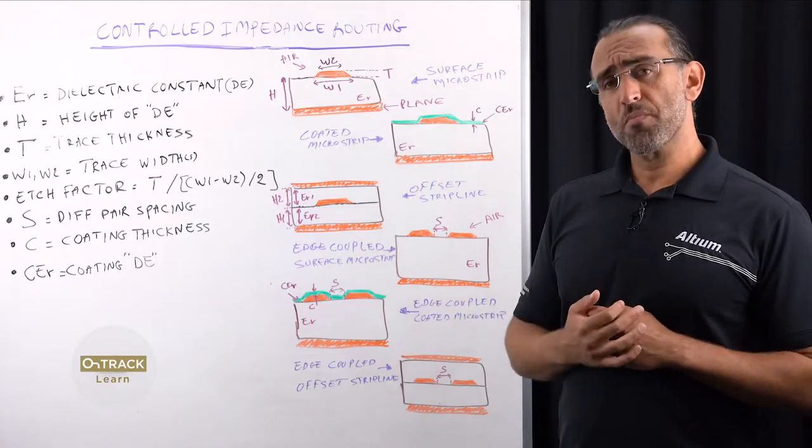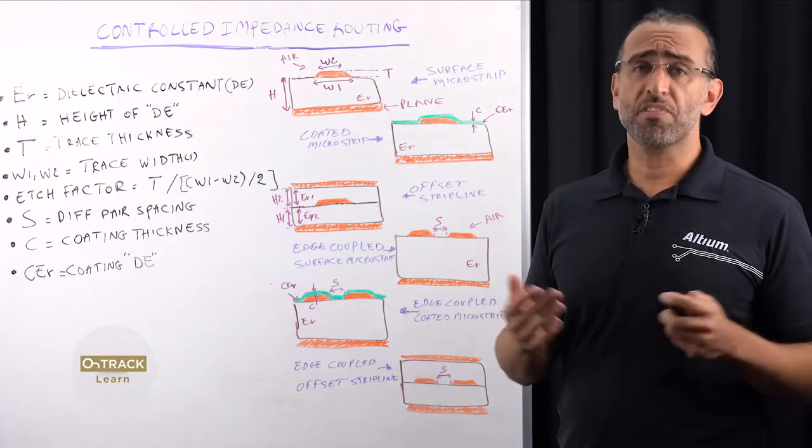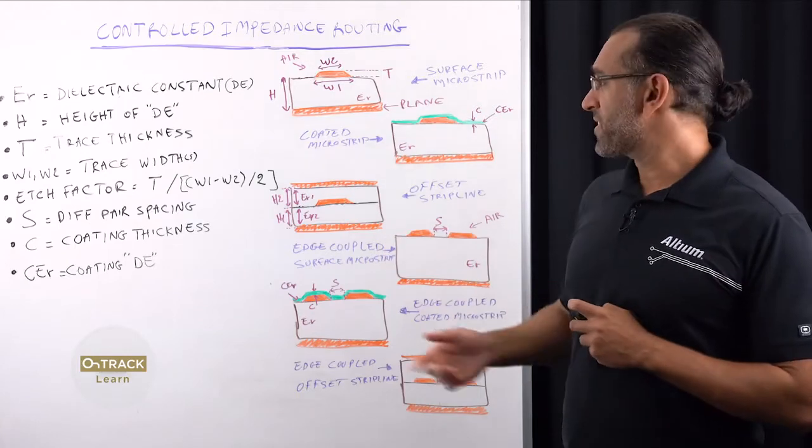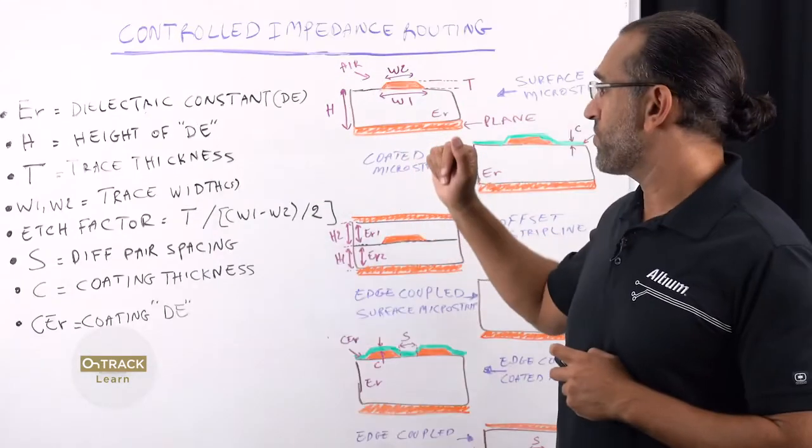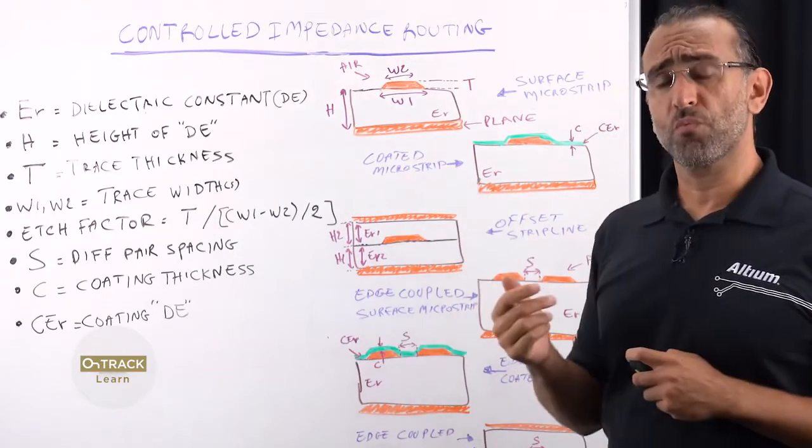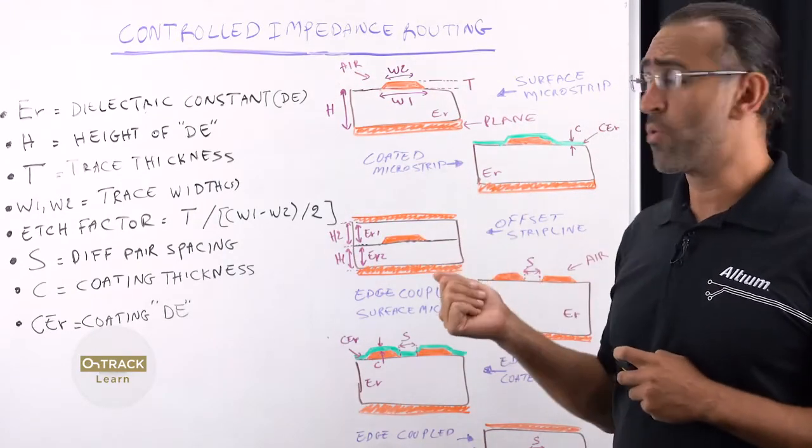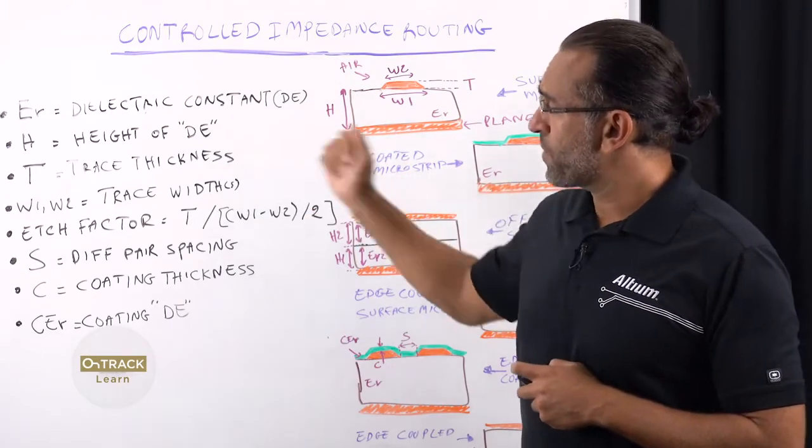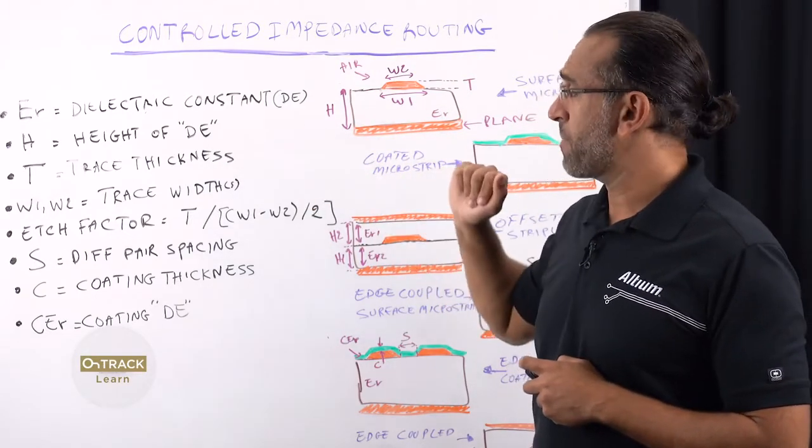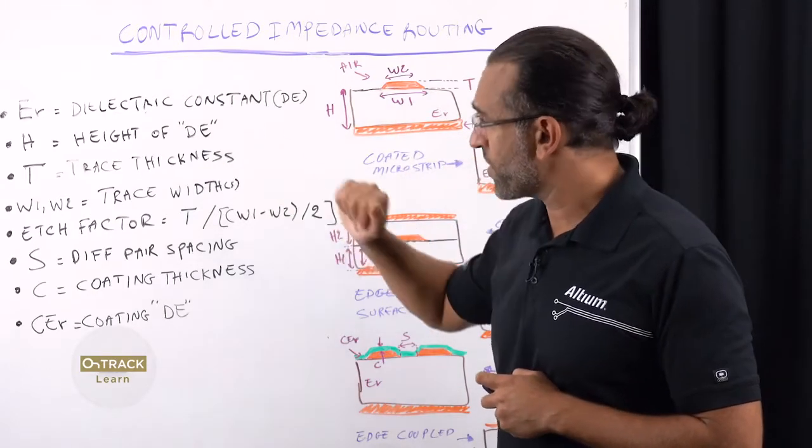So in the simplest form, the trace impedance value is determined from the PCB structure and is generated by these factors I have here in this board. And the first of which is the dielectric constant of the material, whether it is the prepreg or the core, and then the height of that dielectric material, the trace width, the trace thickness, and also the trace width.